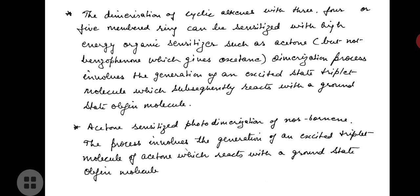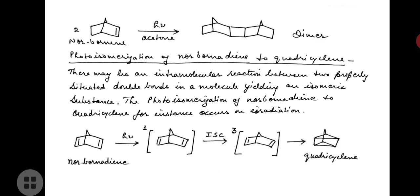The dimerization process involves the generation of an excited triplet molecule which subsequently reacts with a ground state molecule. Now let us study an example: acetone-sensitized photodimerization of norbornene. The process involves the generation of an excited triplet molecule of acetone which reacts with a ground state olefin molecule. Here is a reaction showing the acetone-sensitized photodimerization of norbornene.